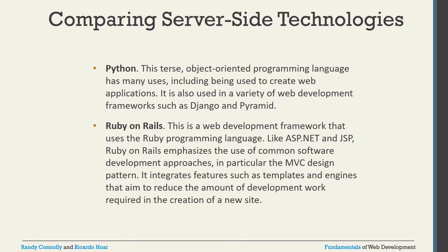Next is Python — an object-oriented programming language with many uses, including creating web applications. To develop web applications with Python, you use frameworks like Django and others. These frameworks are very popular for web development using Python. Next one is Ruby on Rails — a web development framework that uses the Ruby programming language. Like ASP.NET and JSP, Ruby on Rails supports the MVC design pattern and integrates features such as template engines.